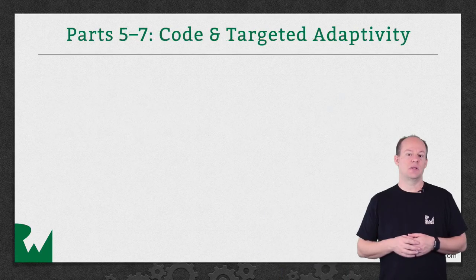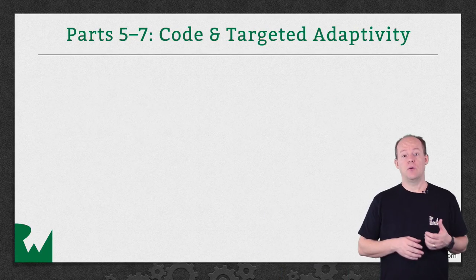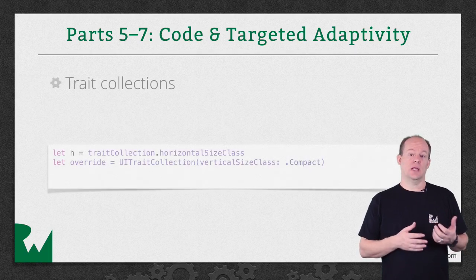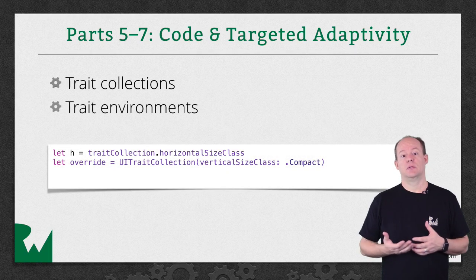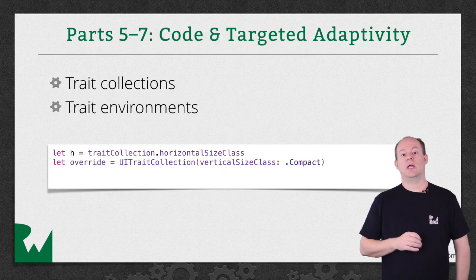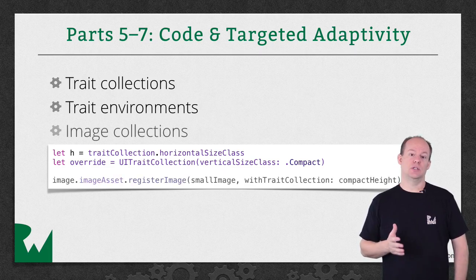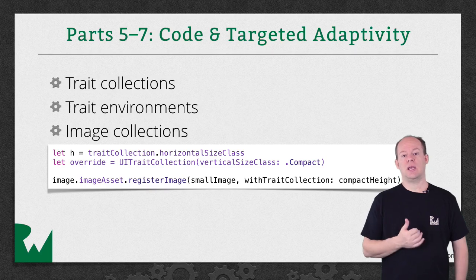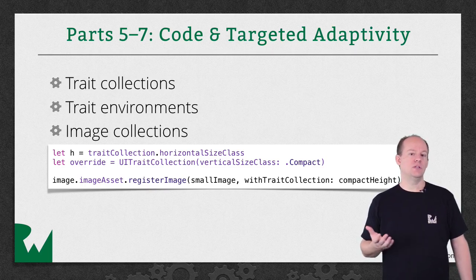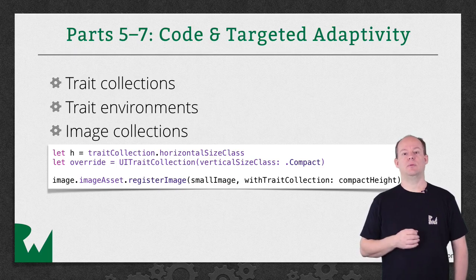In the next part of the series, we'll look at some of the code underpinnings of Adaptive Layout: Trait Collections and Trait Environments. You'll learn how to query the environment to get information on the current size class. You'll also look at the class behind Adaptive Image Collection and how to dynamically add images to a collection that you might not have at design time, because you've downloaded them from the network, for example.